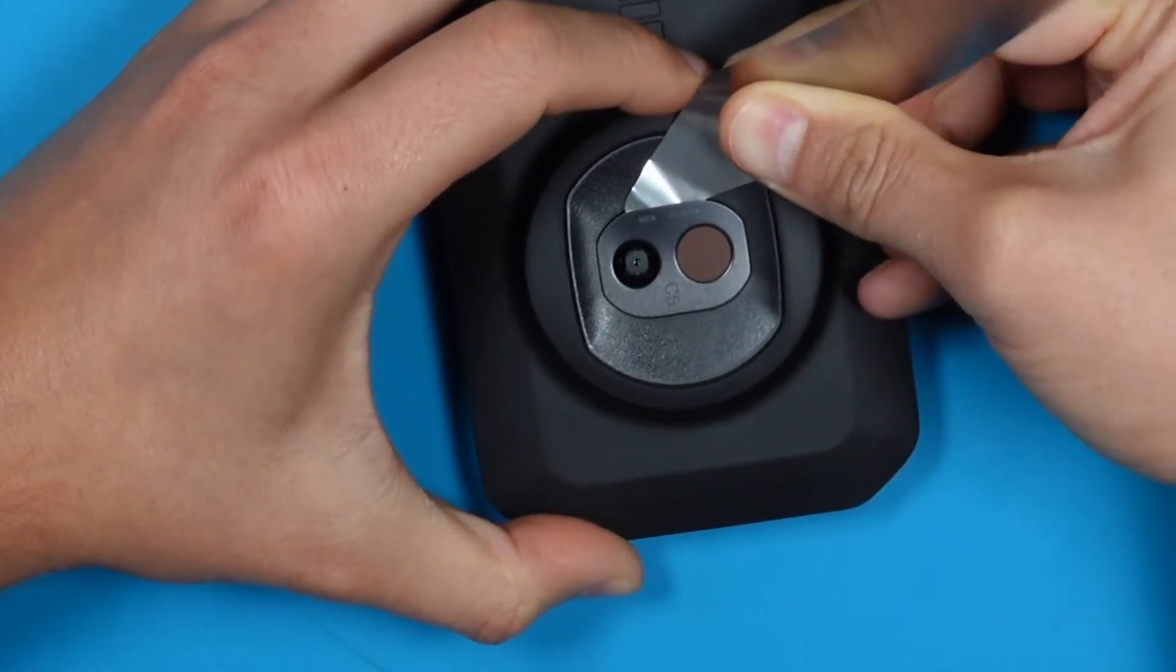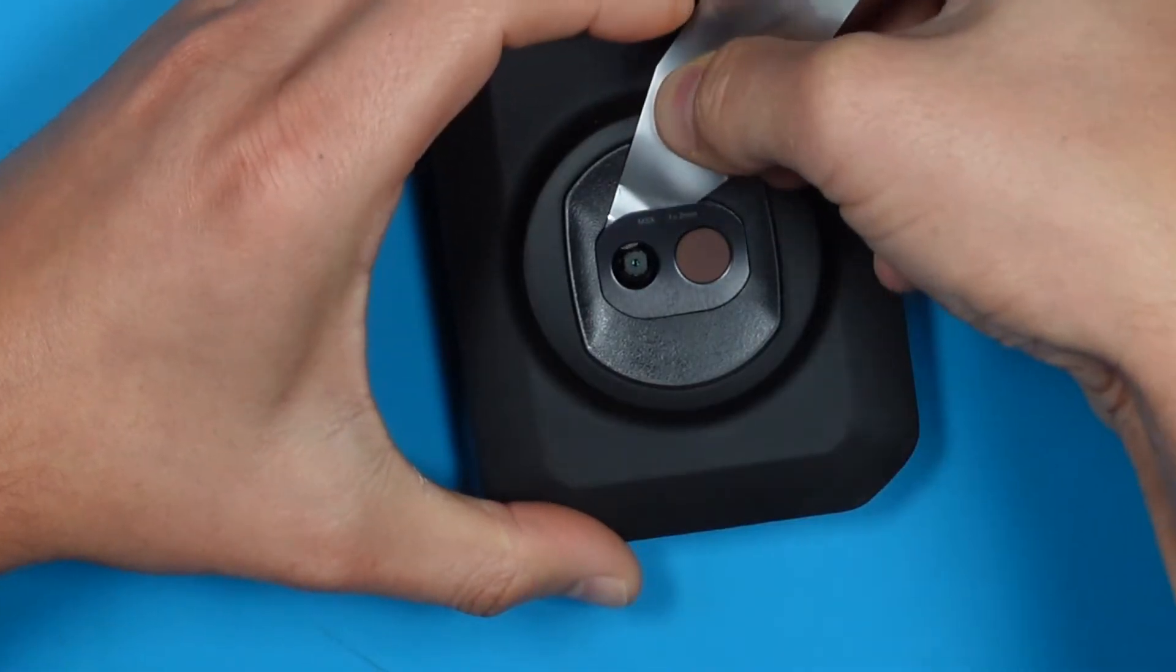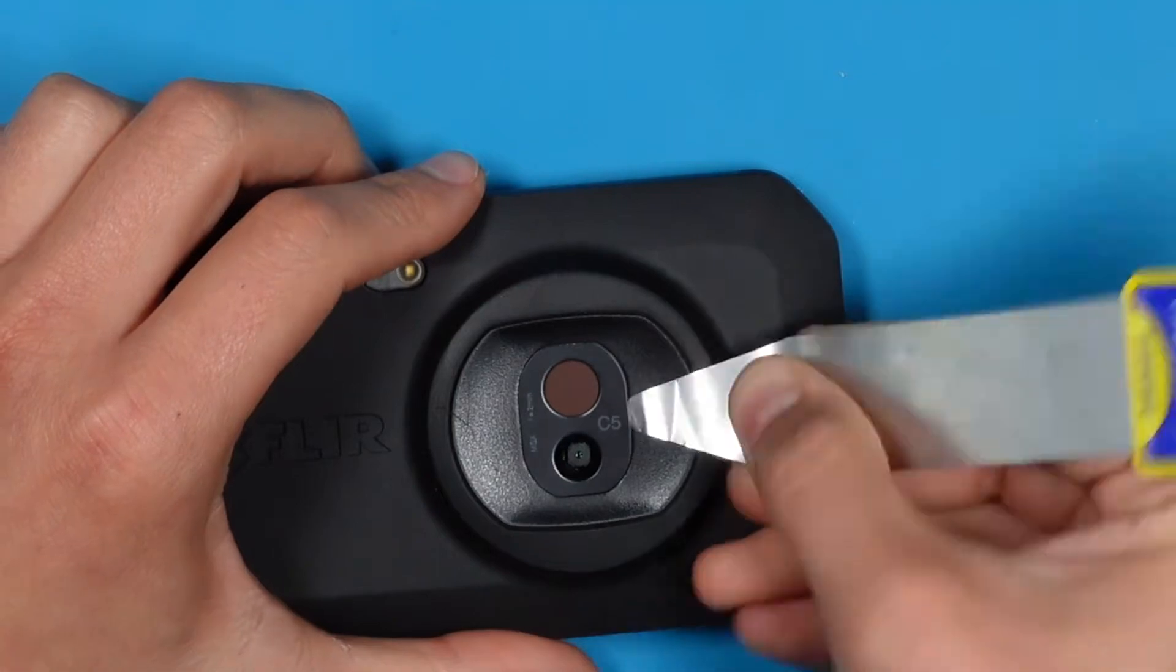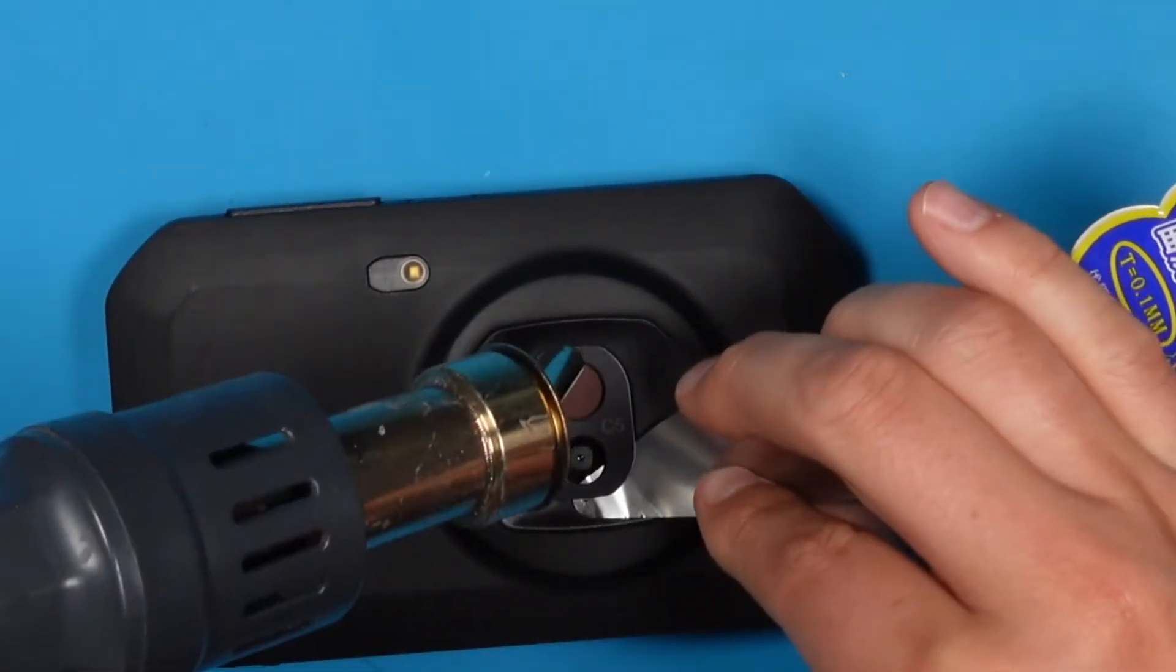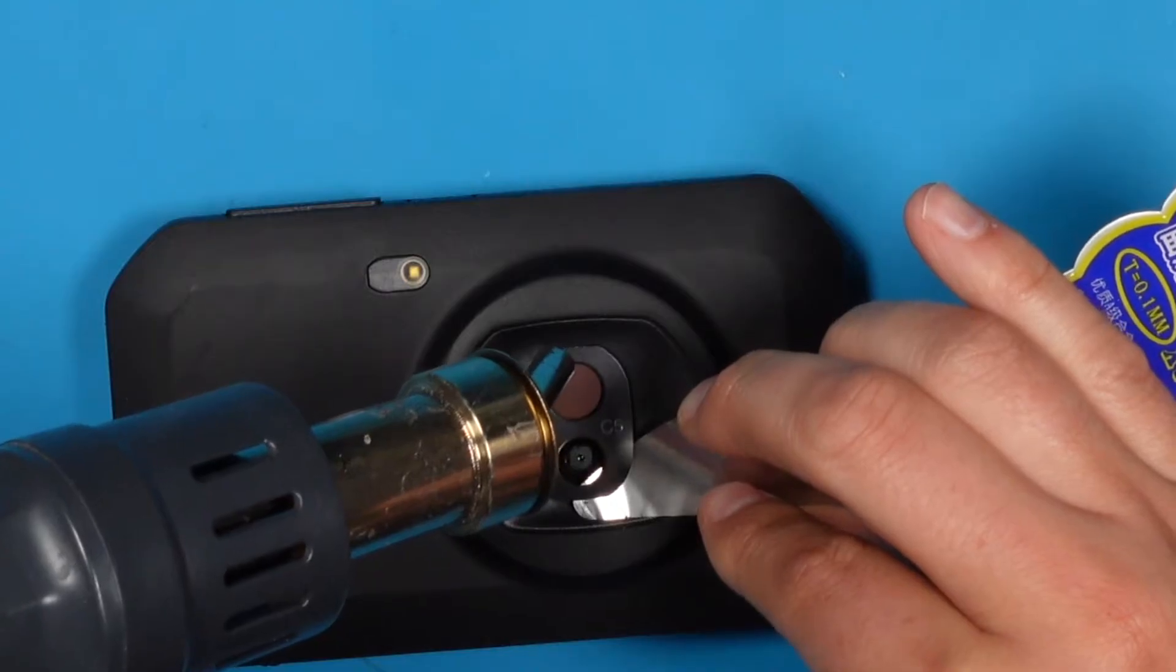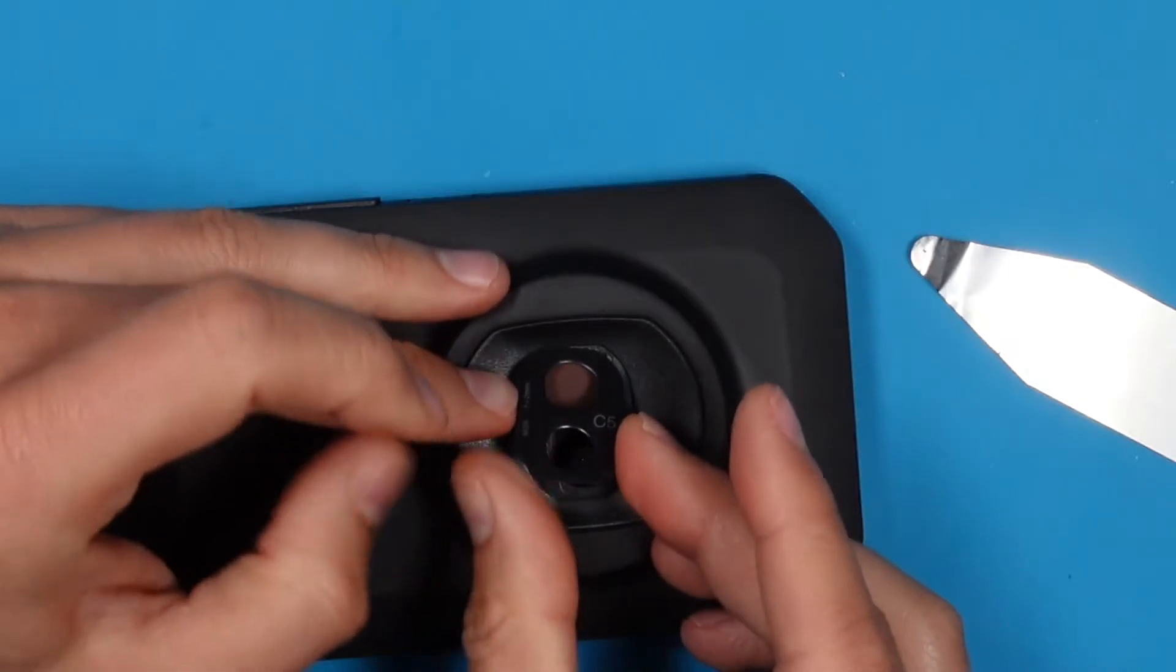Don't insert it too deeply. We want to avoid scratching anything. Our main goal here is just to soften and loosen the adhesive. Just a little bit more. Let's remove the cover.